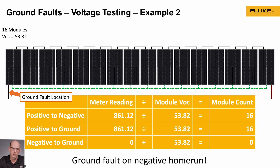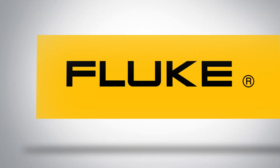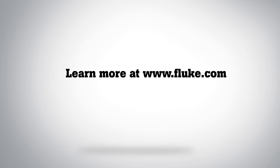That's an example of how to use voltage testing to identify the location of a ground fault in a string of solar modules. For more information on the tools you can use to do this test, go to fluke.com.